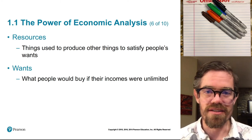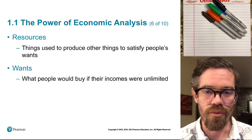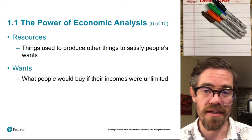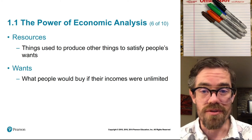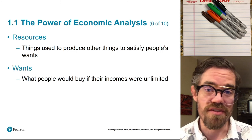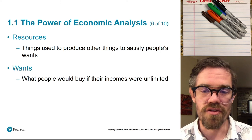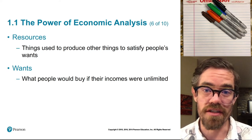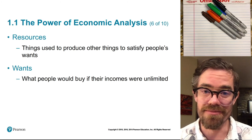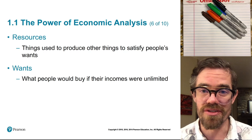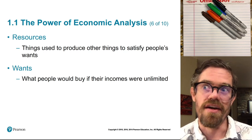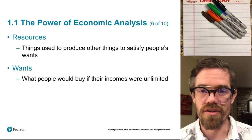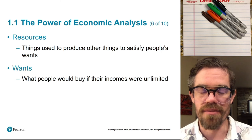Now as far as wants — this is where it gets a little more abstract. A want is basically a thing that you would buy if you had unlimited resources or unlimited income. For example, I would never purposefully spend money to get the flu, so the flu is not a want. But I would love to take a vacation in Thailand — I don't currently have the resources or income to do that, but it is a want. If I had unlimited money, I would go to Thailand. That's how we define wants in economics: anything you would buy if you had unlimited income or resources.